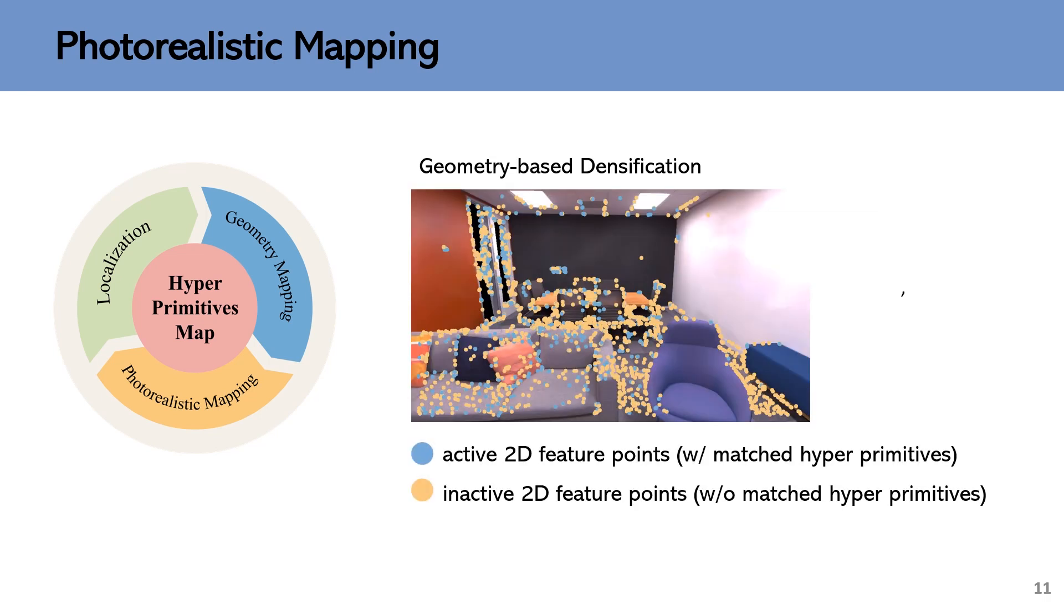The first one is geometry-based densification. If we consider photorealistic mapping as a regression model of the scene, denser hyper primitives generally can better model the complexity of the scene for higher rendering quality. The question is how to make a better trade-off between the reconstruction quality and speed. We argue that the 2D geometry feature points spatially distributed in the frames essentially represent the region with compressed texture that requires more hyper primitives.